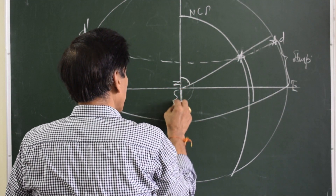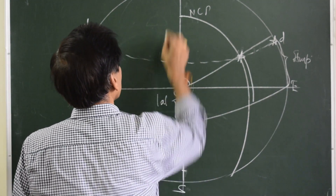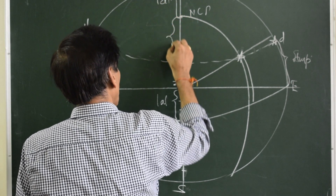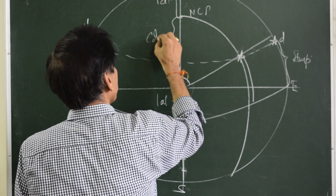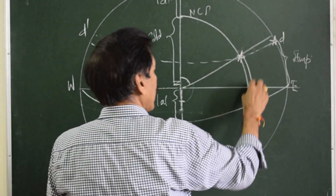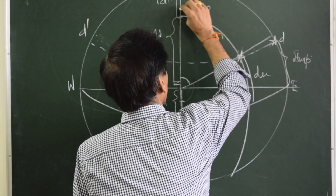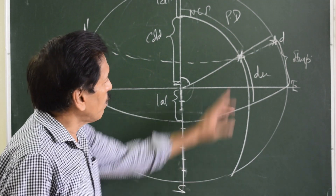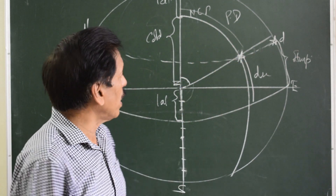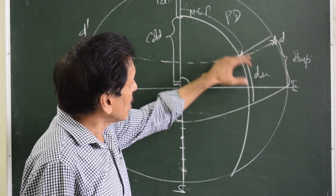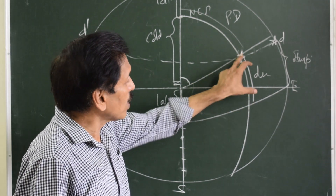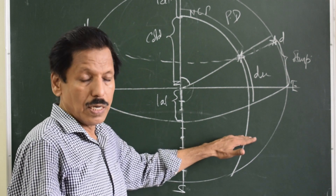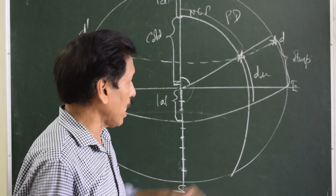This is a measure of latitude, so this part is co-latitude. This is declination, so from here to here is polar distance. If the star and pole are on the same side, then polar distance is 90 minus declination. If the star was on the other side of the equinoctial, we would say polar distance is 90 plus declination.